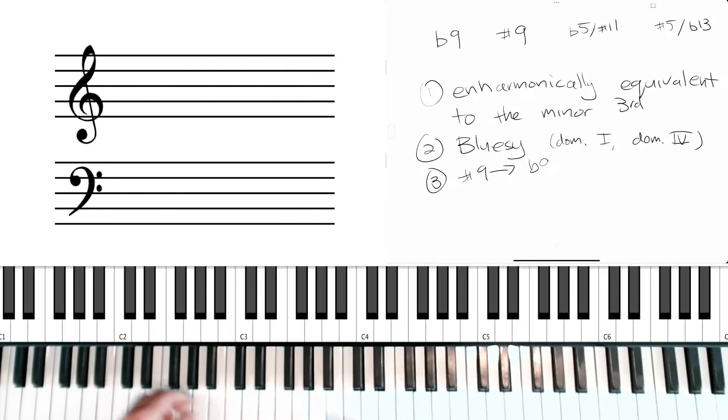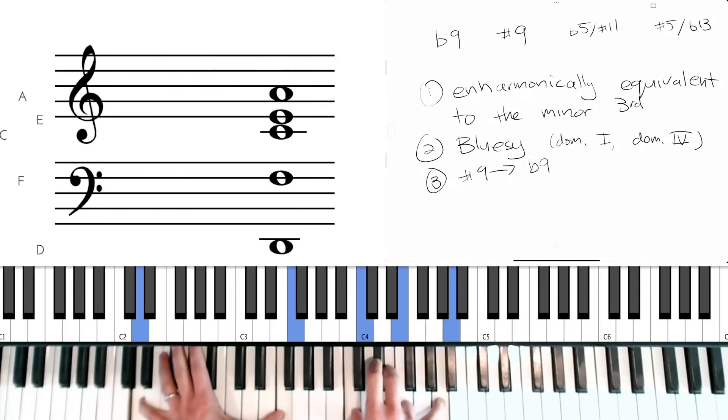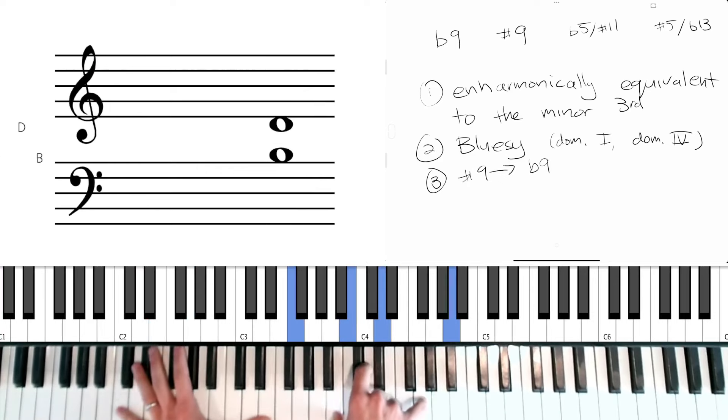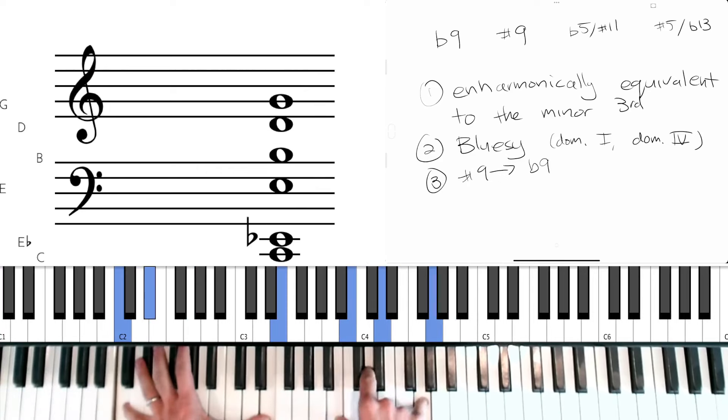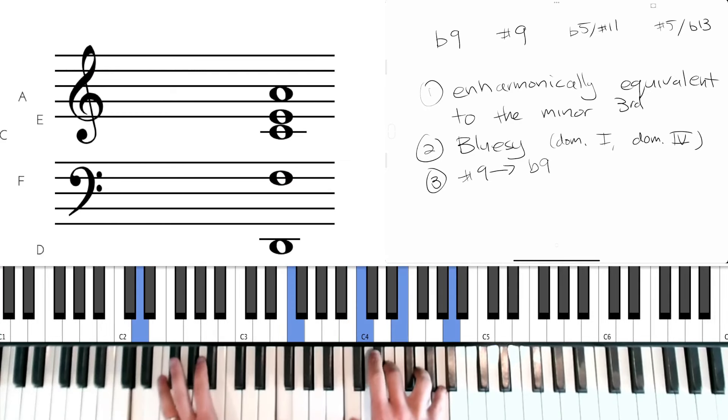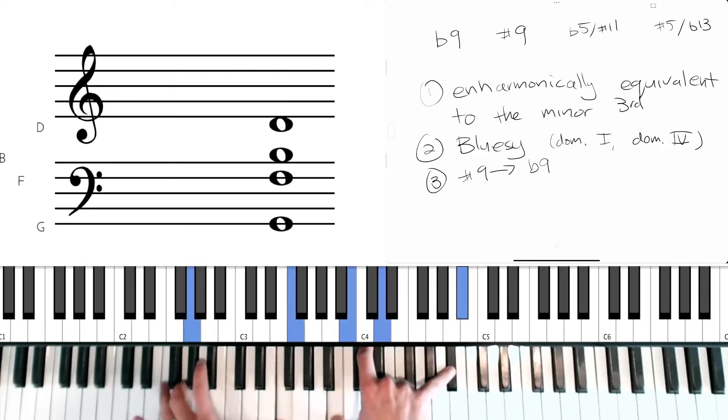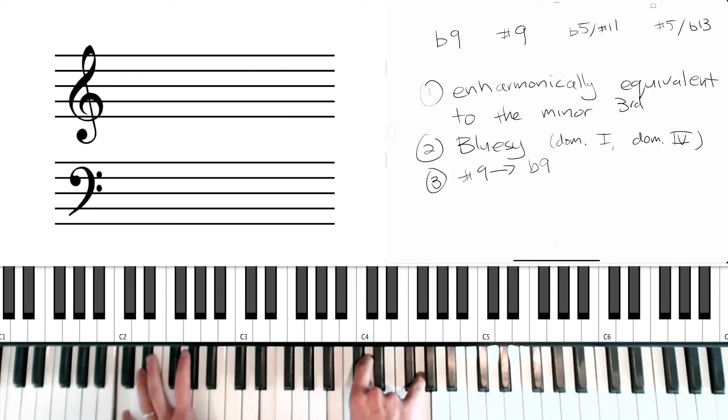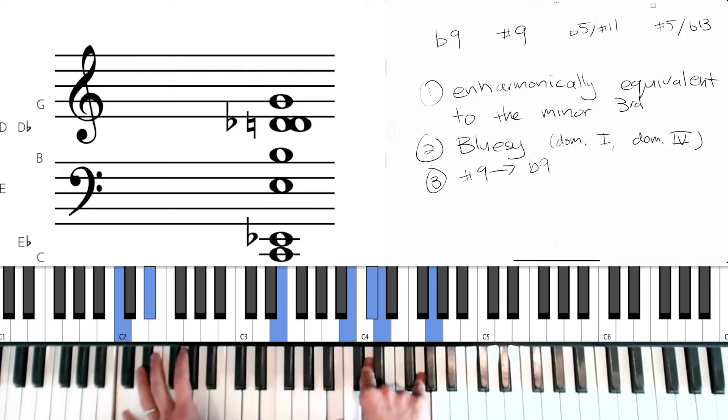So if my two five one is this, okay, in the friendly key of C, if I do want to use the sharp nine in this context, one nice trick is to start on the sharp nine, move from the flat nine, and then it resolves nicely to the fifth.